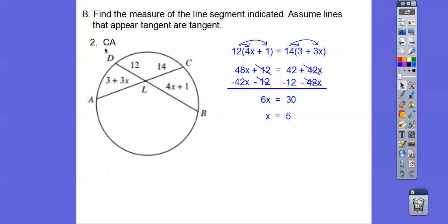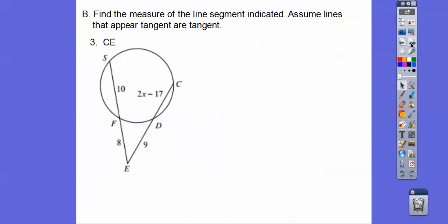Over here it says find the length of CA, so CA is this segment, so we'll plug in x equal 5. So we get 3 plus 3x and then plus that 14. I combined these two guys, that's where I got that 17. So 3 plus 14 is this 17, and then 3 times 5 is going to give us 15, so 17 plus 15 is 32. So CA equals 32.